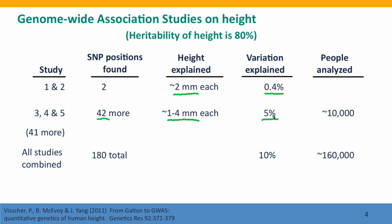Since then, there have been at least 41 more studies, and when all of these studies are combined, they found 180 different places around the genome where different SNP alleles were correlated with differences in height. As we've said before, it's not necessarily the case that the SNP alleles themselves caused the differences in height — they may have just been nearby. But altogether, all of these SNP positions still explained only 10% of the difference in height, even though these studies together looked at 160,000 people.